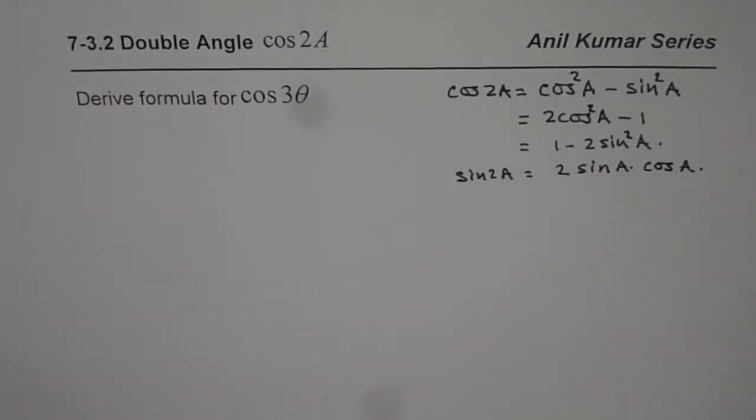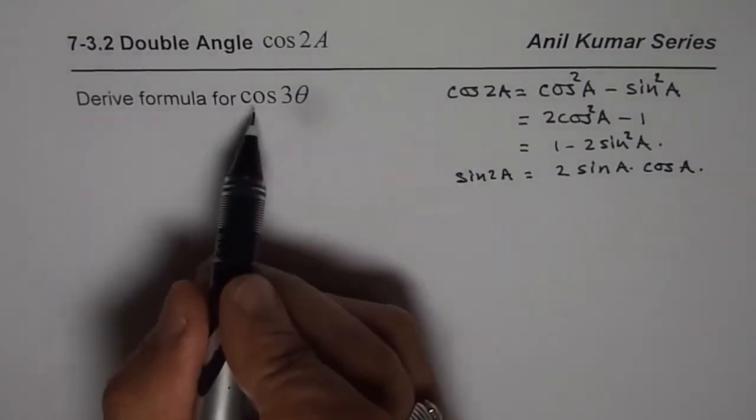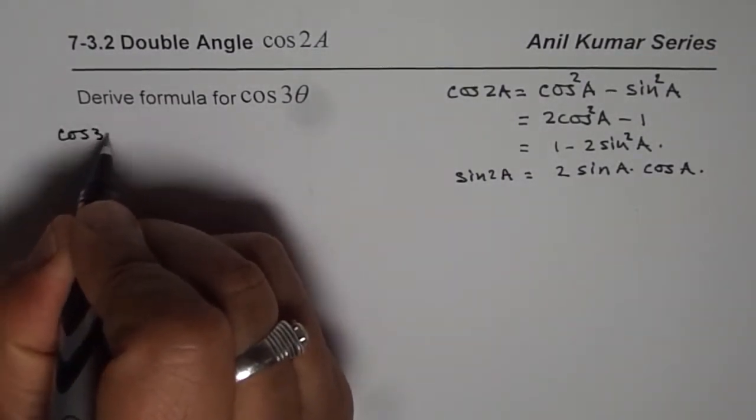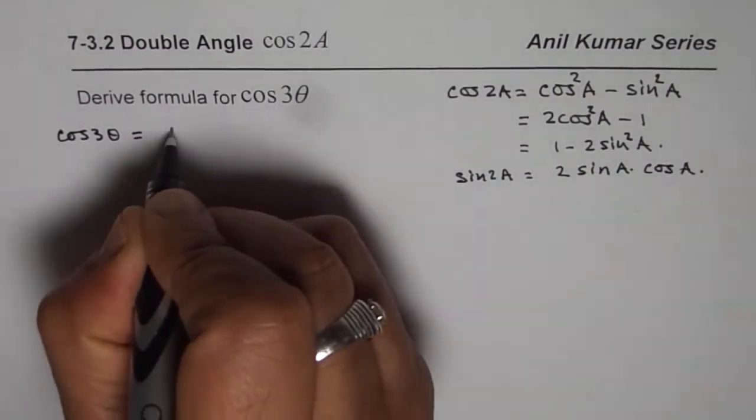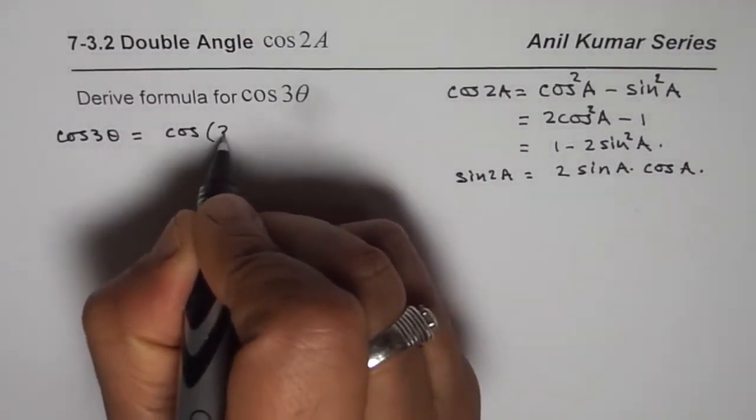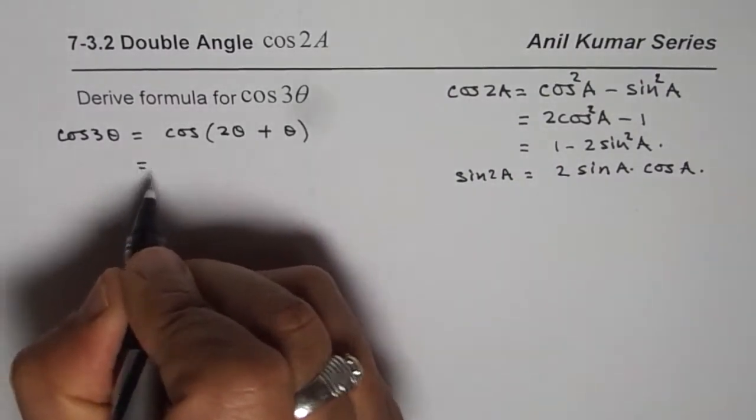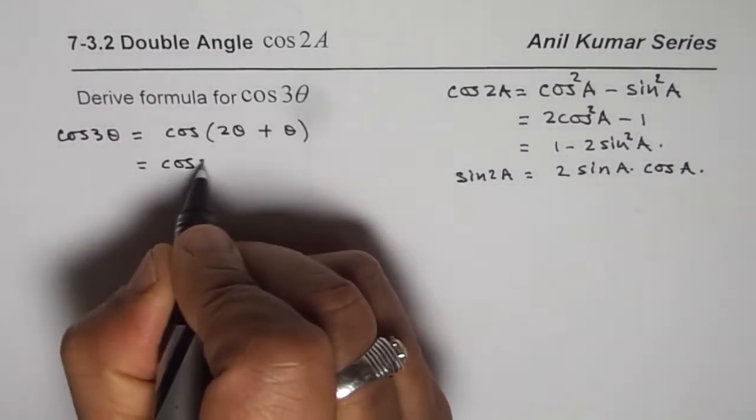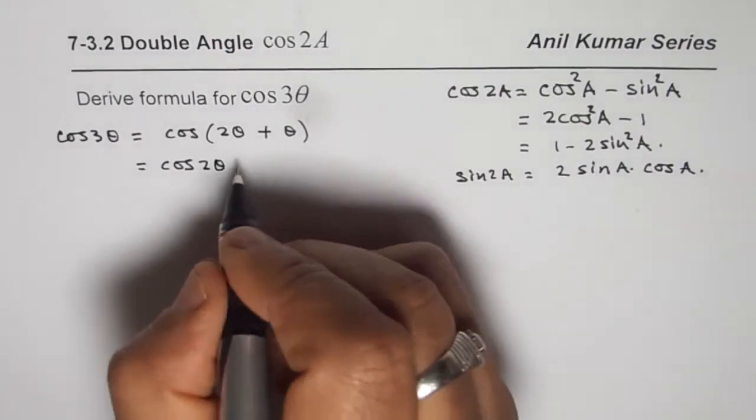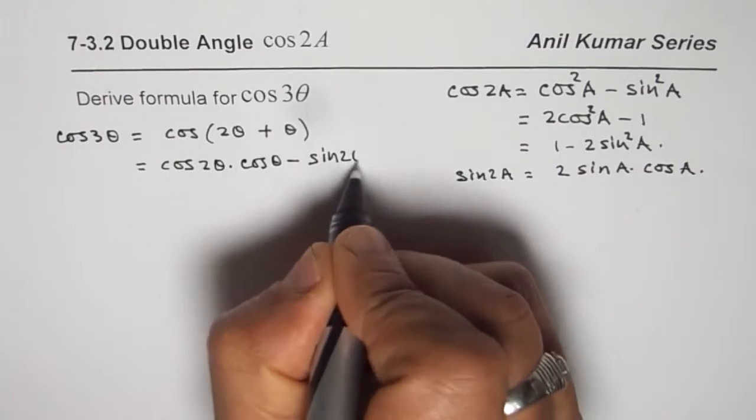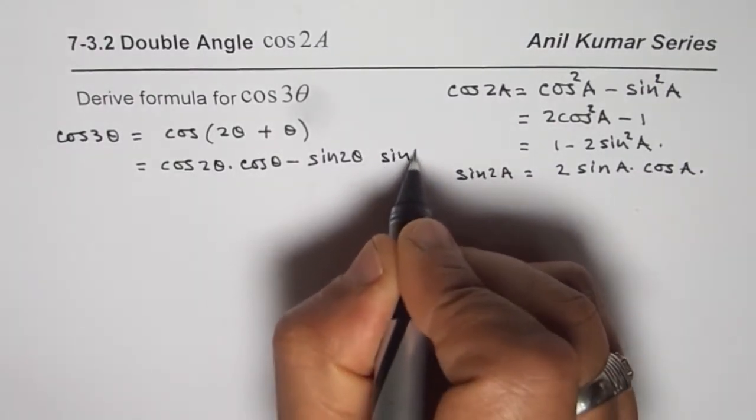Now what we need to find is formula for cos 3 theta. So cos 3 theta could be written as cos of 2 theta plus theta. Which we can expand as cos 2 theta cos theta minus sine 2 theta sine theta using compound angle formulas.